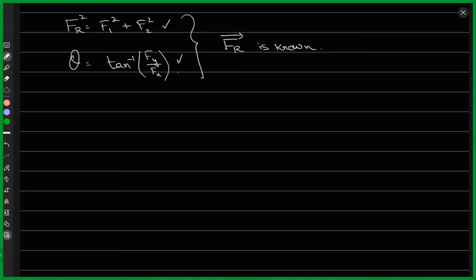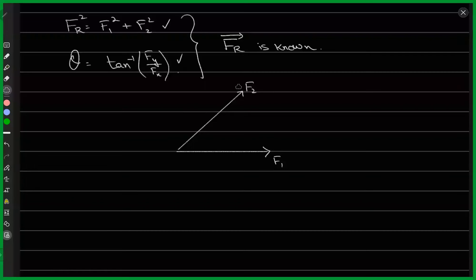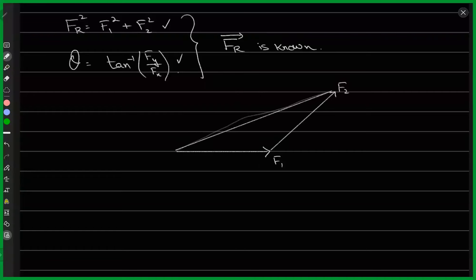We'll have to consider this triangle again. Suppose this is F1, and you apply some F2 in this direction. Now, how do we add these vectors? If you remember, we'll put them head to tail — so I can put this F2 vector on the head of F1, and this gives me the resultant vector.